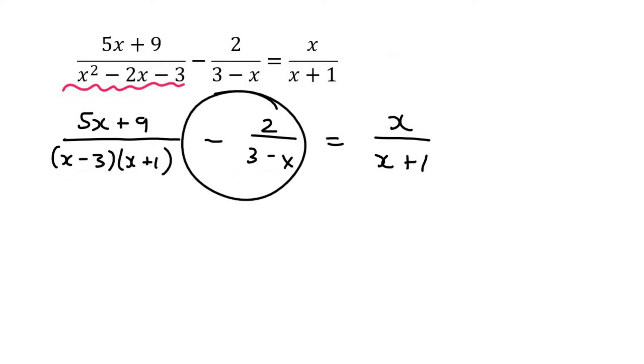So I'm going to switch this one. All that I have to do mathematically is change this sign over here. So that'll switch, and then I can switch that. But, so on the next line, it's going to go 5x plus 9 over x minus 3, x plus 1, plus 2 over x minus 3. See what I did there? Equals to x over x plus 1.